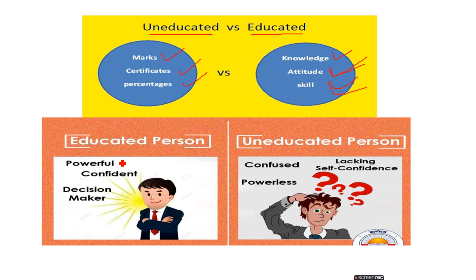Educated people feel powerful, confident, and are good decision-makers — very quick decision-makers — because they know what is right and what is wrong. Whatever decision they take for their future, for their children, for their son or daughter, they know what type of decision to make. Uneducated people are confused.